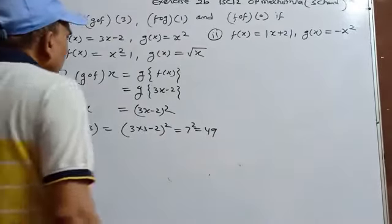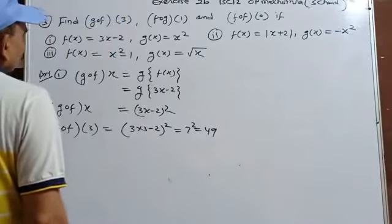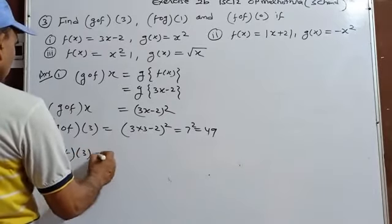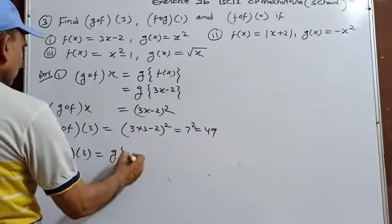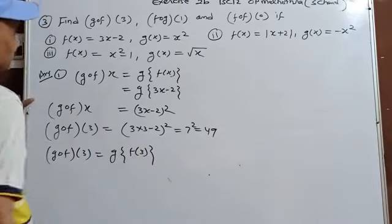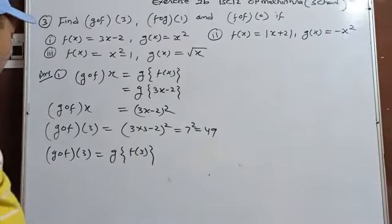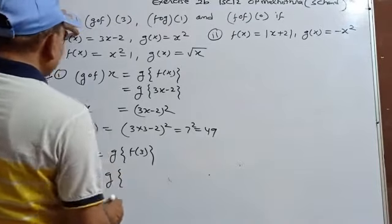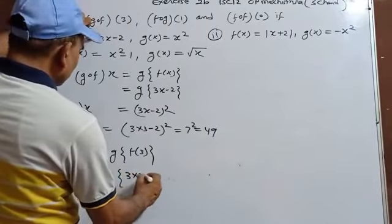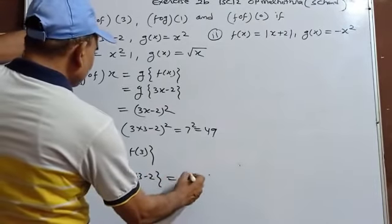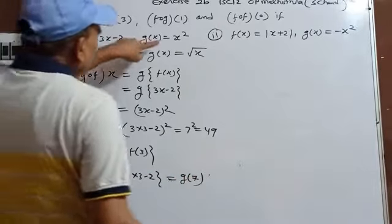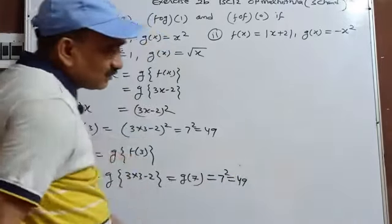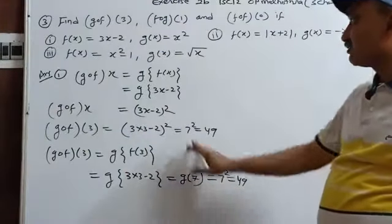Alternatively, gof(3)=g(f(3)). f(3)=3×3-2=7, so g(7)=7²=49. Same answer.